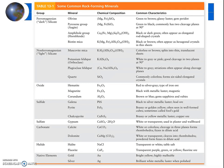Your textbook table 13.1 shows some common rock-forming minerals and also notes the mineral groups. For example, the mineral halite is part of the group of halites. Gold, silver, copper, graphite, and diamond are all native elements because they just contain one element.